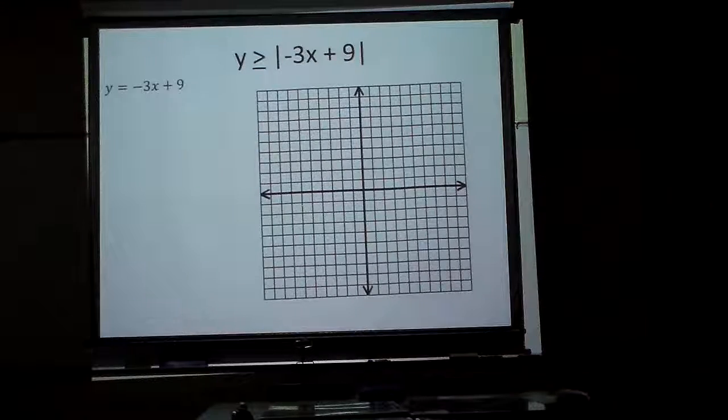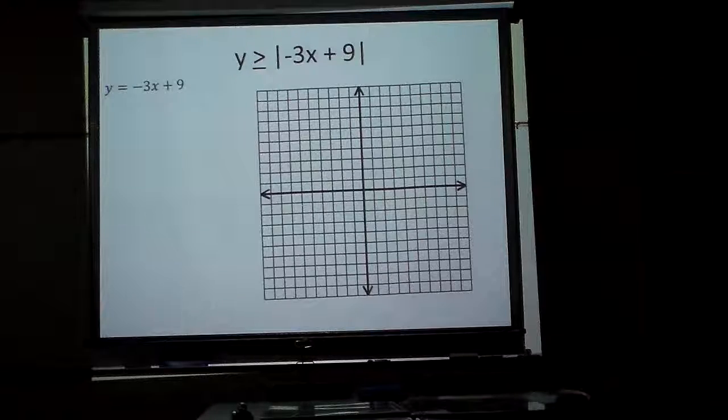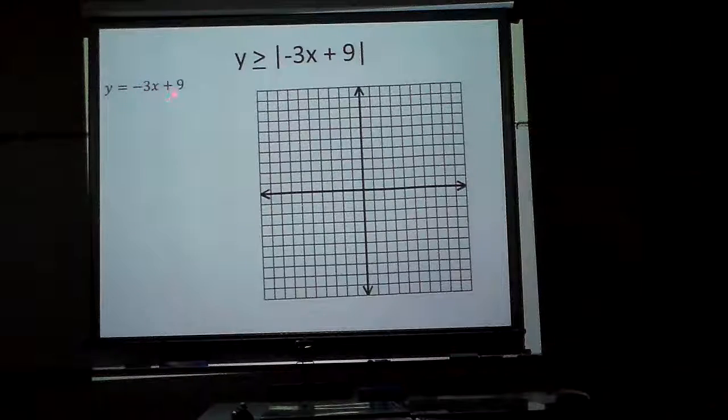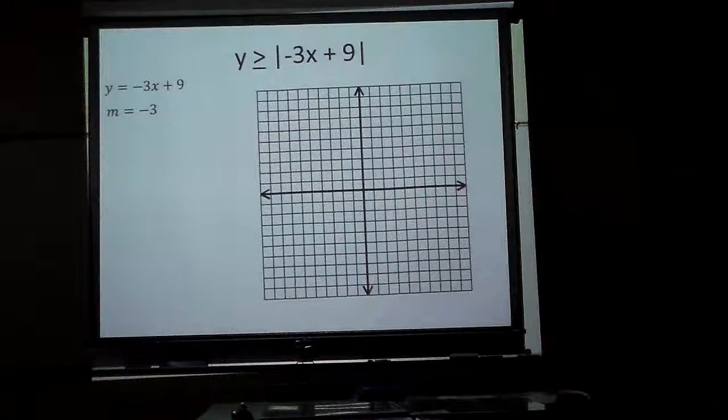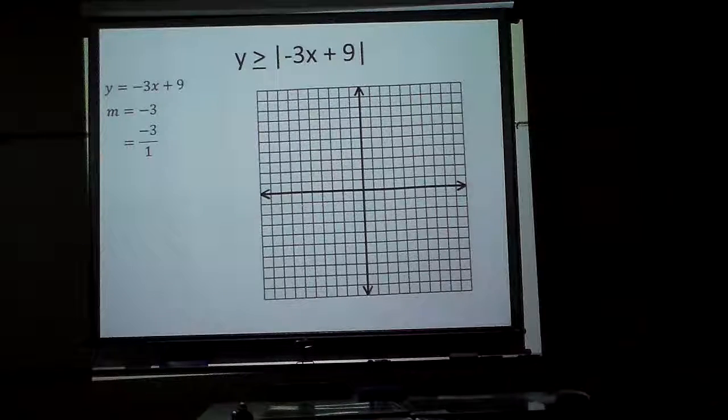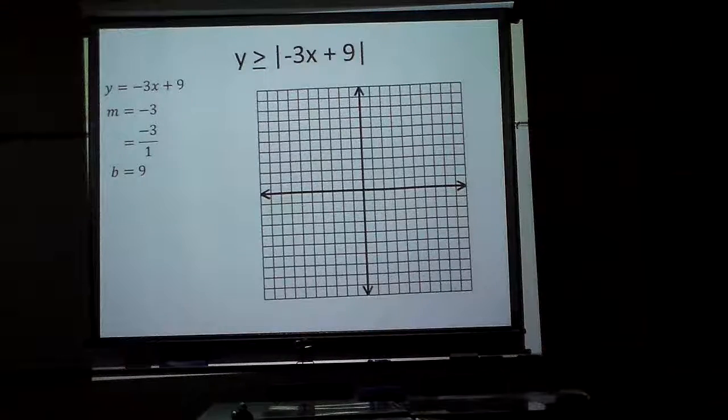So first off, let's do the following. Let's just pretend it's an equal. Well, it's negative 3x plus 9. Well, my slope is negative 3, or negative 3 over 1, and the y intercept is 9.